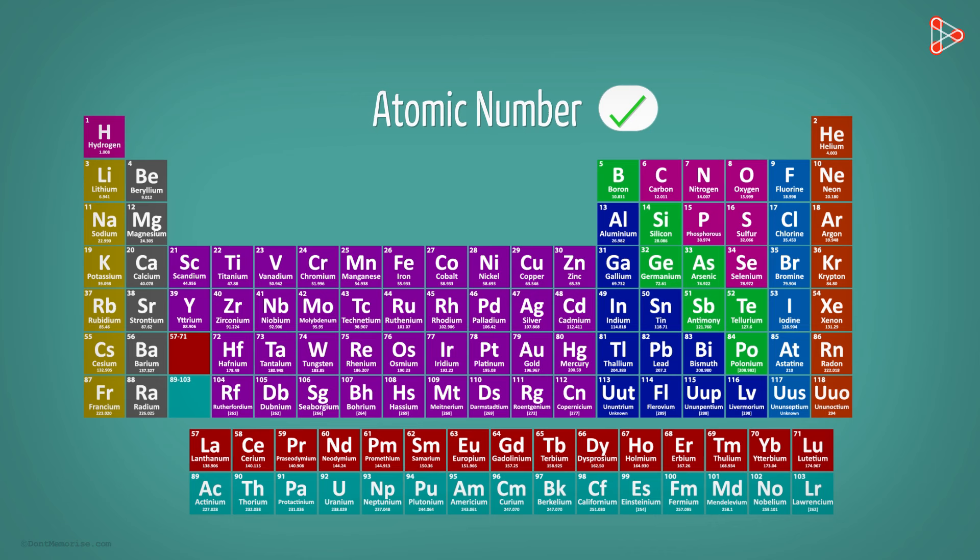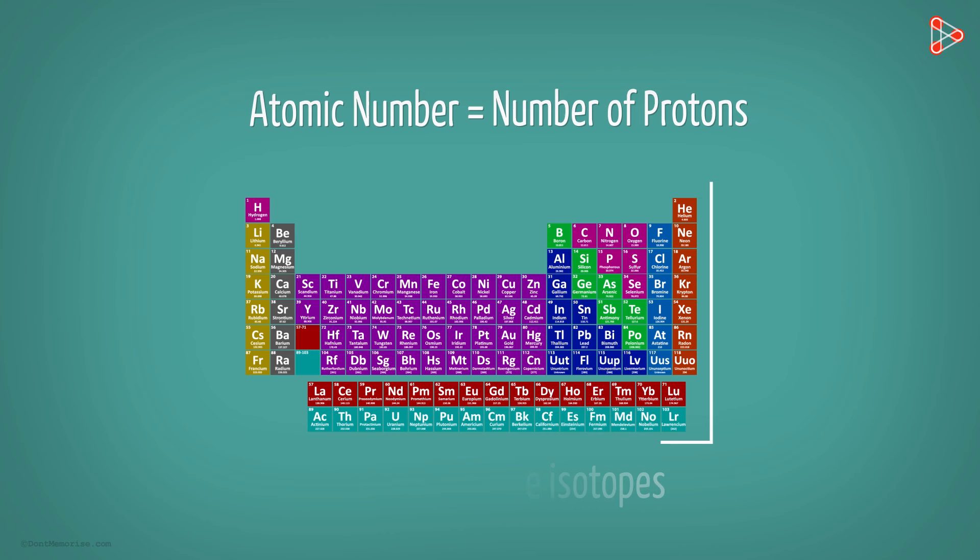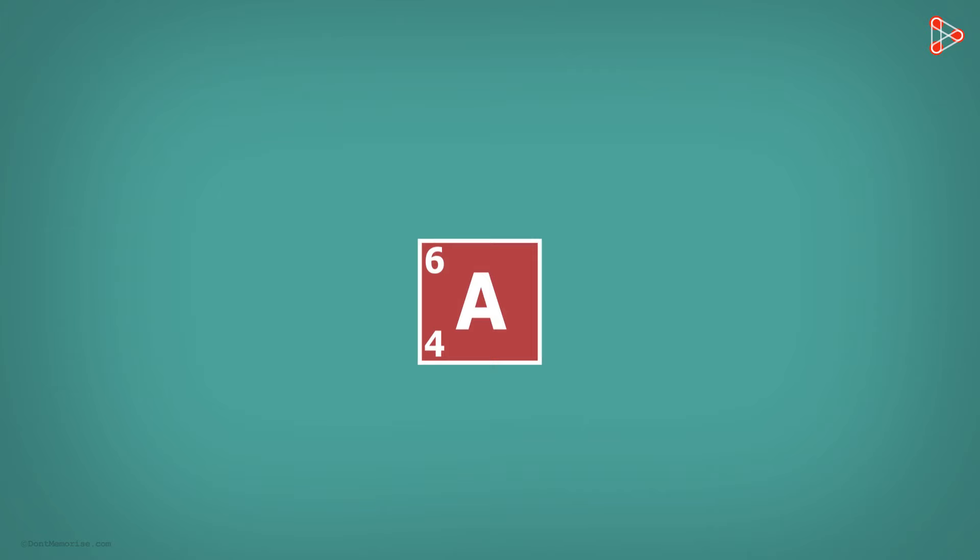An atomic number is given by the number of protons. That means the different number of neutrons will not be a worry for us. So it was possible to place the isotopes now. Because all the isotopes of any particular element could be placed at one single place.